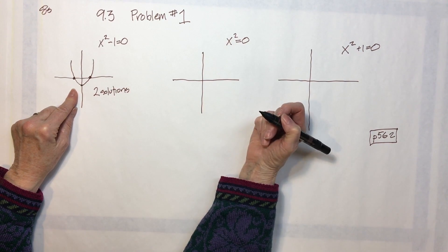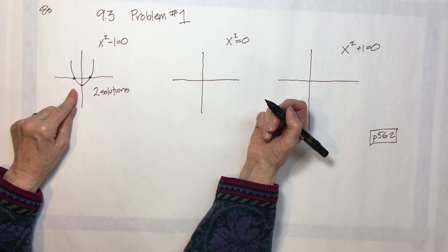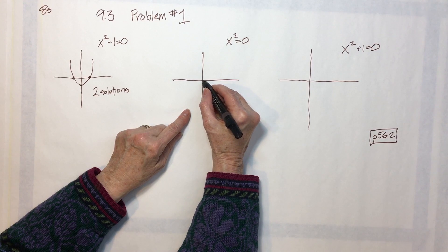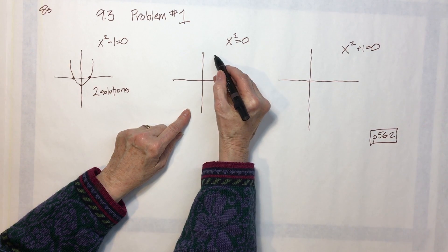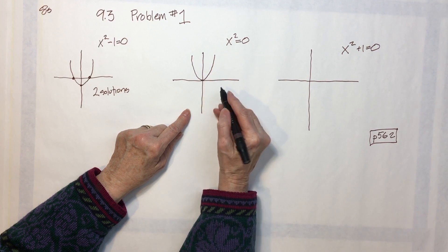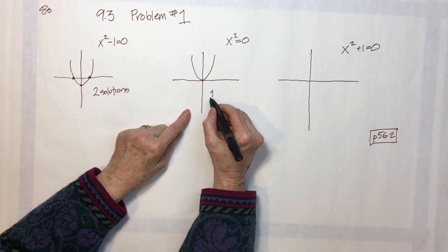This one over here has no bx or c. It will start at the origin, and it's positive, so it's going to go up. And it has just one solution.